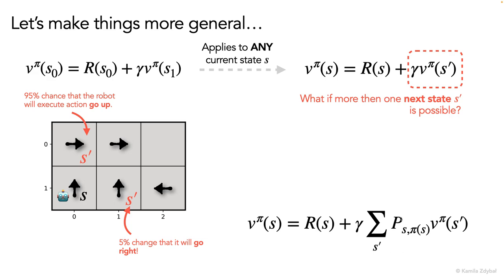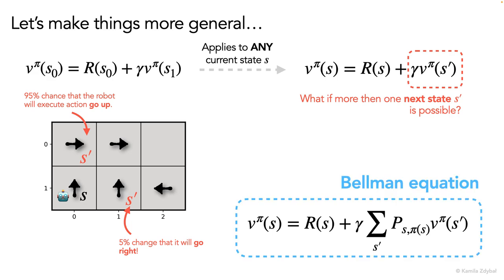So this summation would go over two elements in this case. And typically this summation will be over a small number of elements, because usually only a handful of states are immediately achievable from any current state. Now this equation is the Bellman equation that we wanted to build, and it's a very important equation that lets us solve reinforcement learning problems.